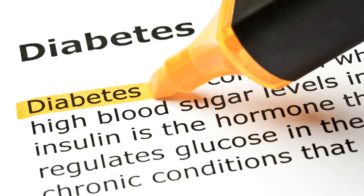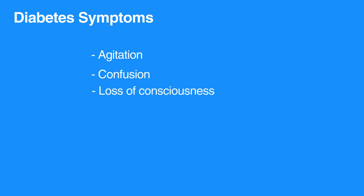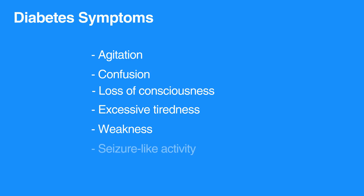Diabetes affects an individual's ability to regulate blood sugar. Fluctuations in blood sugar in either direction can produce symptoms such as agitation, confusion, loss of consciousness, excessive tiredness, weakness, and even seizure-like activity.